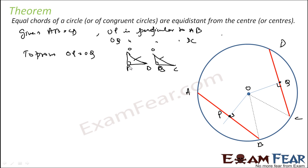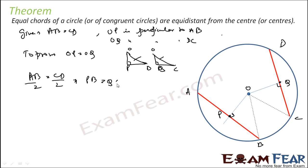So PB is equal to QC. Also, OB is equal to OC since they are all radii. And angle OPB is equal to angle OQC, both equal to 90 degrees. We know that the perpendicular from the center to the chord will bisect the chord.